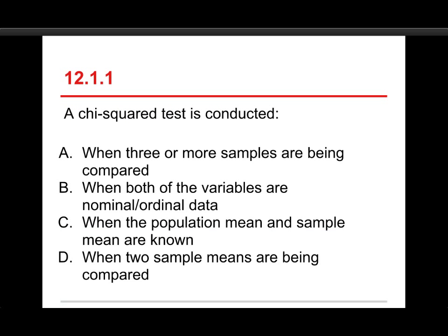The first question is: a chi-squared test is conducted A. when three or more samples are being compared, B. when both of the variables are nominal or ordinal data, C. when the population mean and sample mean are known, or D. when two sample means are being compared.